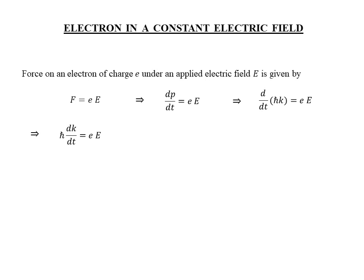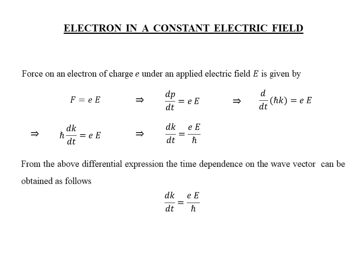Now, as a last step of rearrangement of terms, I will move the h-cross on the left to the right, and I get the relation as shown here. This relation can be interpreted as the rate of change of the wave vector of the electron under an applied electric field. My task is to solve this differential relation and find the time dependence of the wave vector k. Just move dt on the left to the right and integrate dt between the limits 0 and t, where 0 is the initial time — that is the time at which the electric field is turned on — and t is the final time. The corresponding limits on the wave vector are k(0) and k(t), the wave vectors at time instances 0 and t respectively.